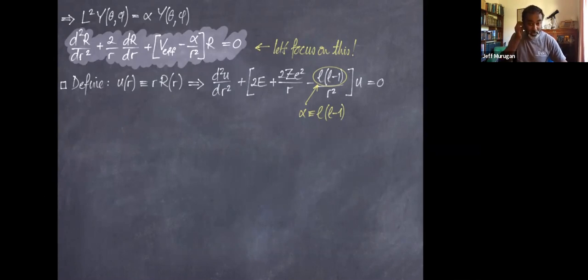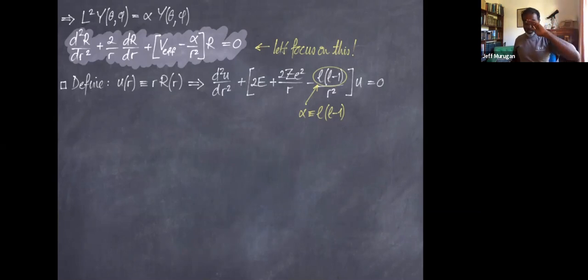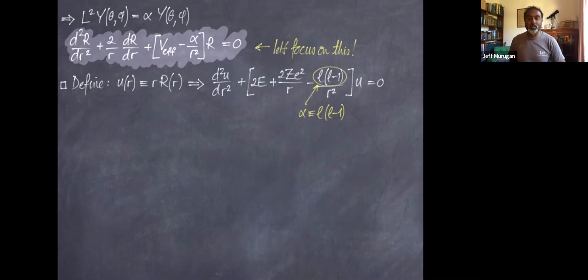To eliminate the first-derivative term 2/r·dR/dr in the radial equation, I rescale the wave function by defining u(r) = r·R(r). Substituting, the differential equation becomes: d²u/dr² + [2E + 2Ze²/r − l(l+1)/r²]u = 0. This is a second-order ODE with just a second derivative and a linear term, which I want to cast into the confluent hypergeometric form.